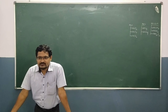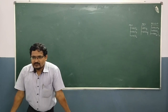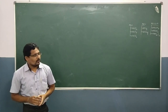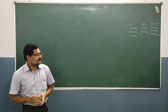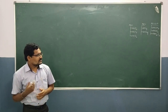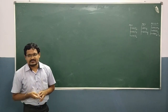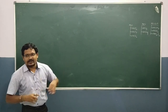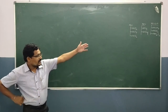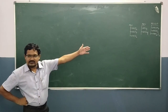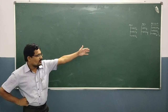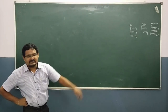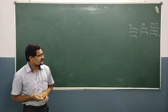Good morning students. Today we continue the topic on noble gas elements. We already discussed xenon compounds, which include xenon halides, xenon oxides, and xenon oxy halides. Xenon halides are three types: XeF2, XeF4, XeF6. Oxides are two types: XeO3, XeO4. Oxy halides are three types: XeOF4, XeO2F2, XeOF2.